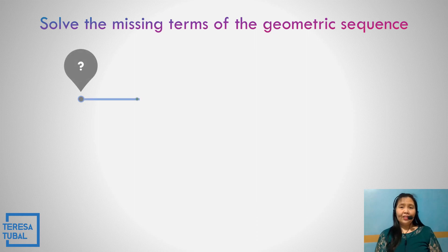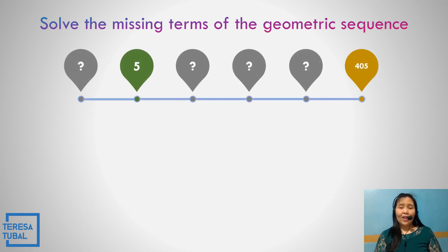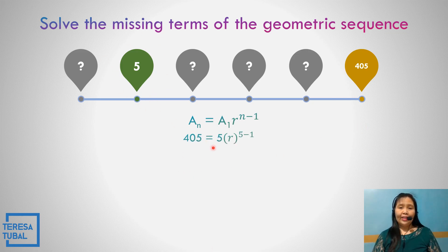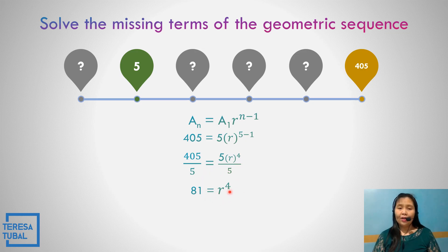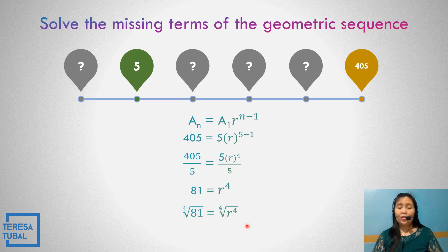Solve the missing term of this geometric sequence: the first term is 5 and the last term is equal to 405. The formula is a sub n equals a sub 1 times r raised to n minus 1. The last term is 405, the first term is 5, and the number of terms is 5, so the exponent is 5 minus 1 equals 4. That gives 405 equals 5 times r to the fourth. Dividing both sides by 5: 405 divided by 5 is 81. Writing the fourth root on both sides: the fourth root of 81 equals the fourth root of r to the fourth.